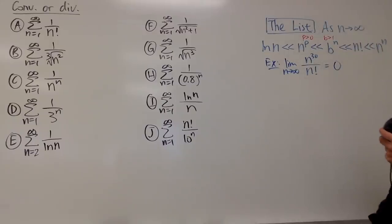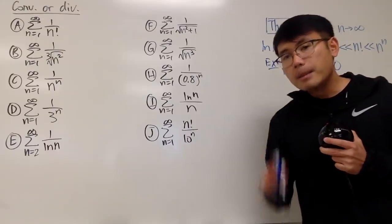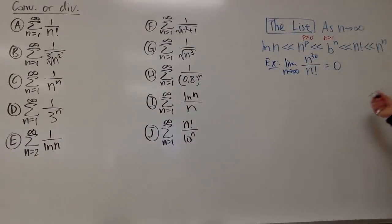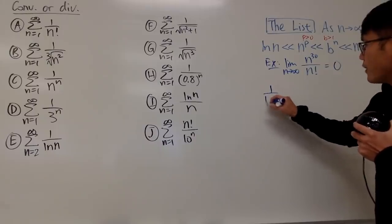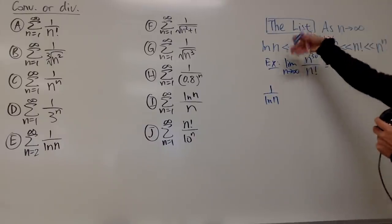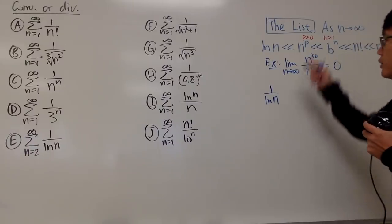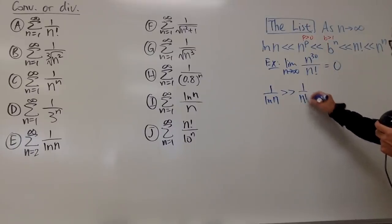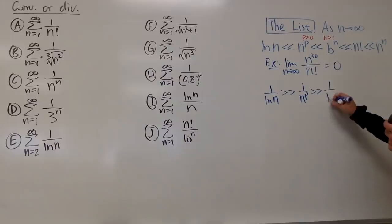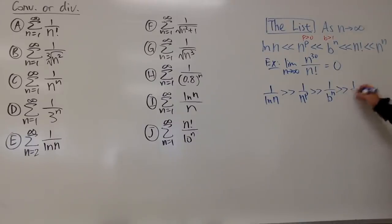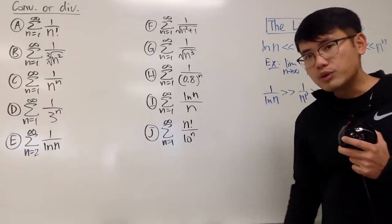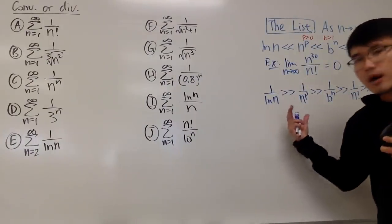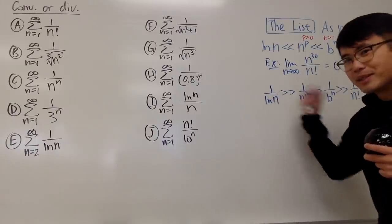It's a good idea to take the reciprocal of everybody. Since everybody is positive, you just flip the inequality symbol. So we have: 1 over ln(n) is much greater than 1 over n^p, which is much greater than 1 over b^n, which is much greater than 1 over n factorial, which is much greater than 1 over n^n. As n goes to infinity, all of these go to 0.